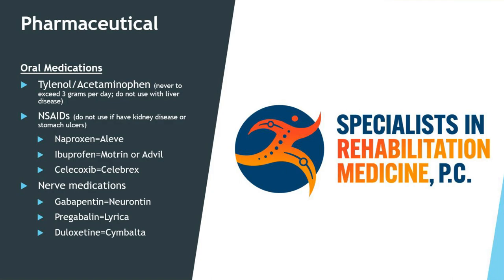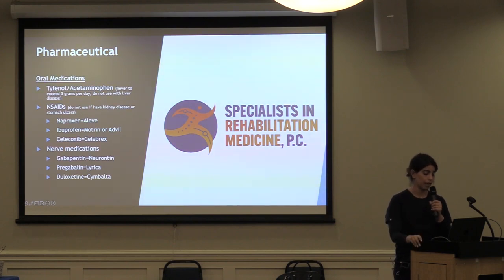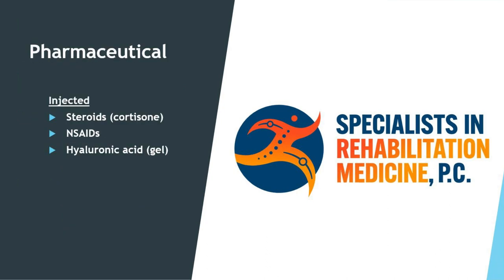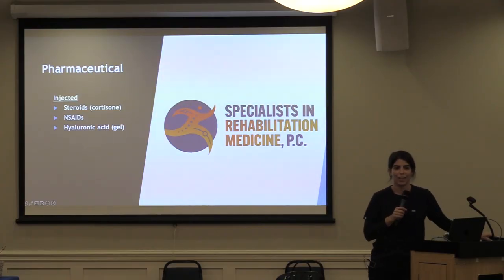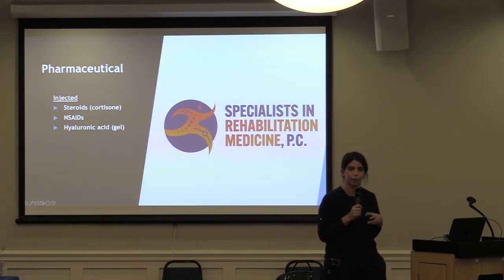We also prescribe nerve pain medications, which help not only with nerve pain—like shooting pain from the neck into the arm or from the back into the leg—but also for chronic pain in general. These include gabapentin, also known as Neurontin; pregabalin, also known as Lyrica; and duloxetine, which is Cymbalta, better known as an antidepressant but very effective for nerve and chronic pain conditions.